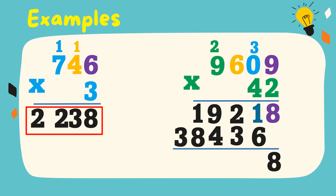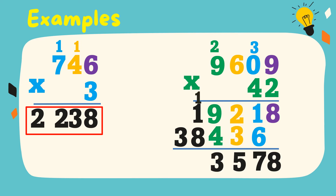Then we're going to add the partial products. Bring down 8. 1 plus 6 is equal to 7. 2 plus 3 is equal to 5. 9 plus 4 is equal to 13. Write 3, regroup 1. 1 plus 1 plus 8 is equal to 10.